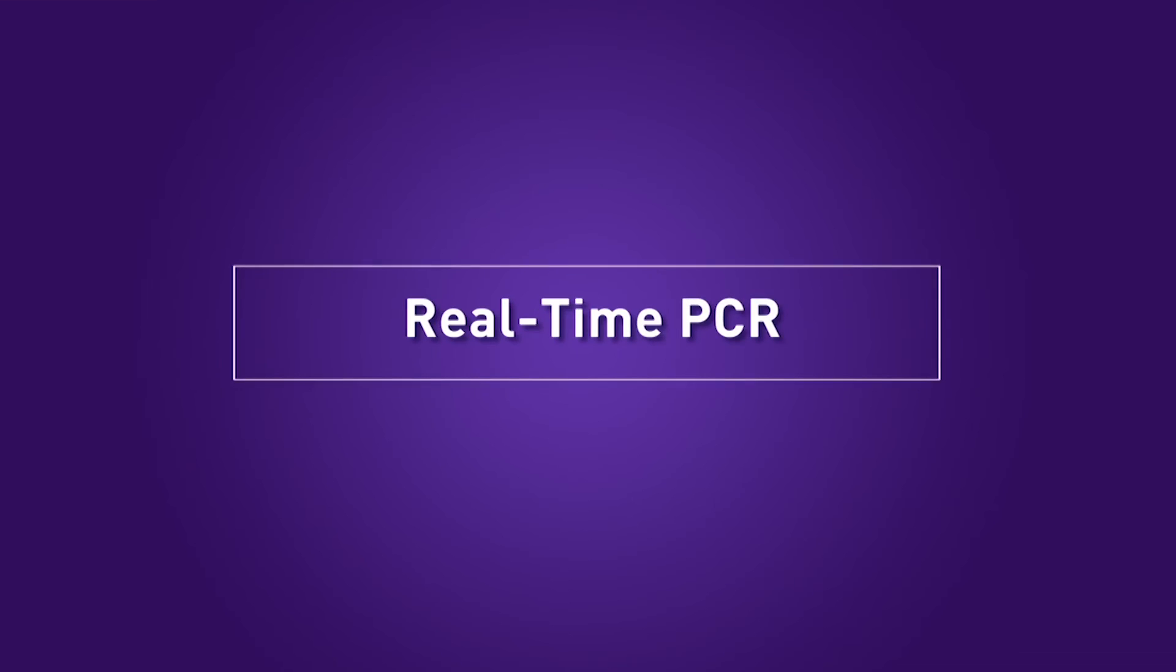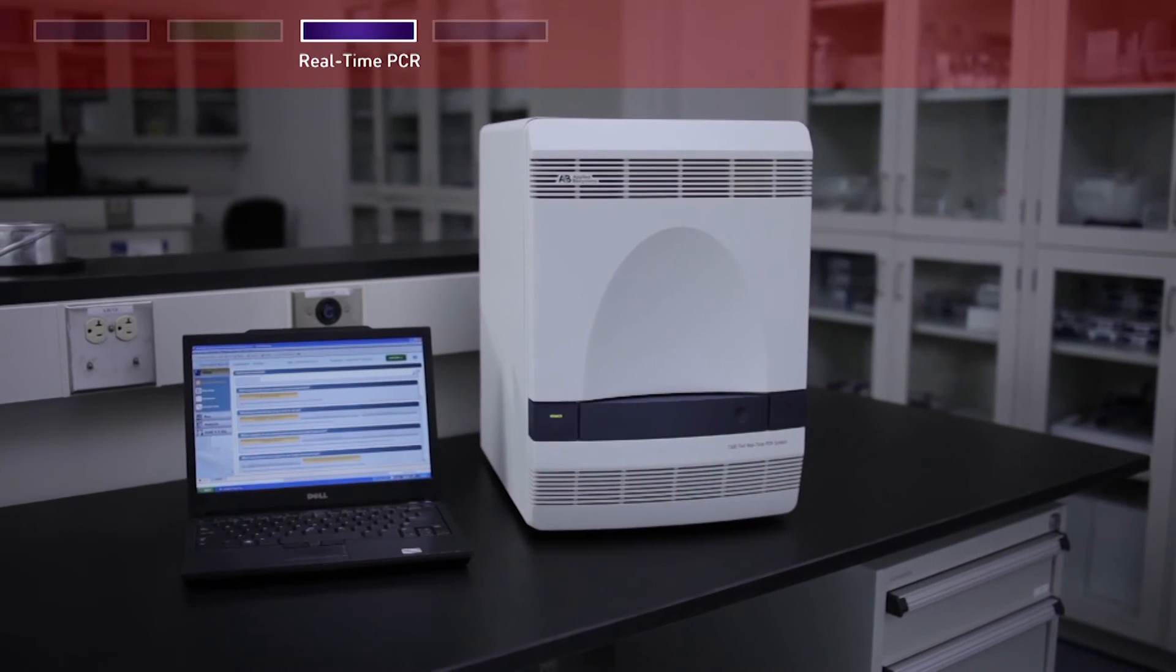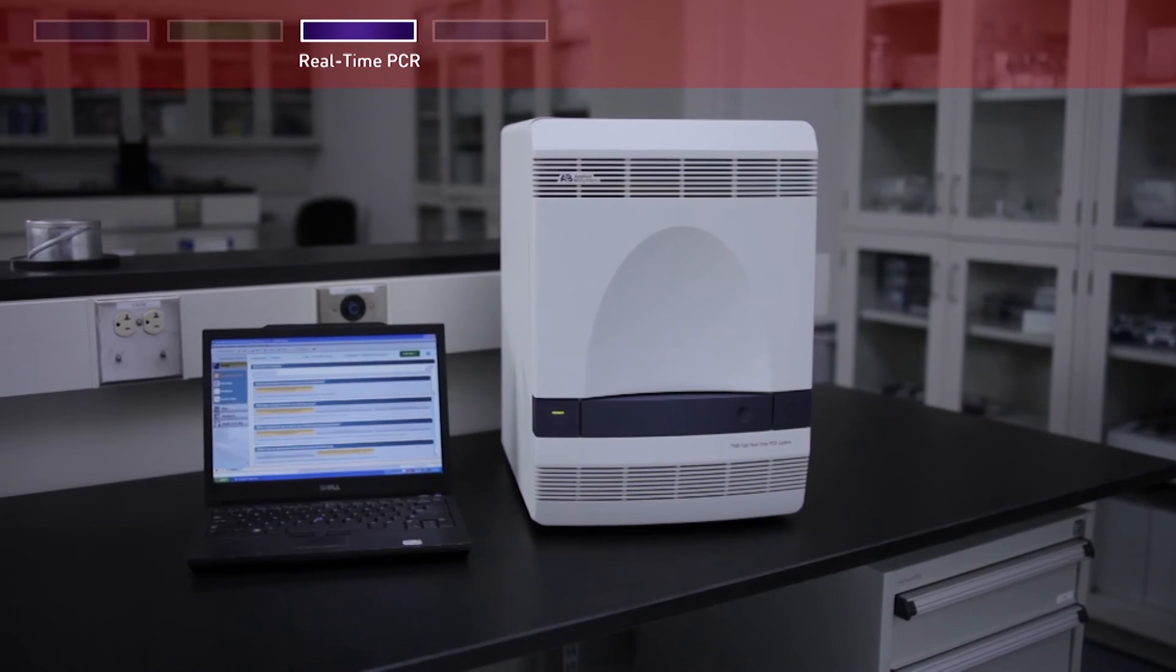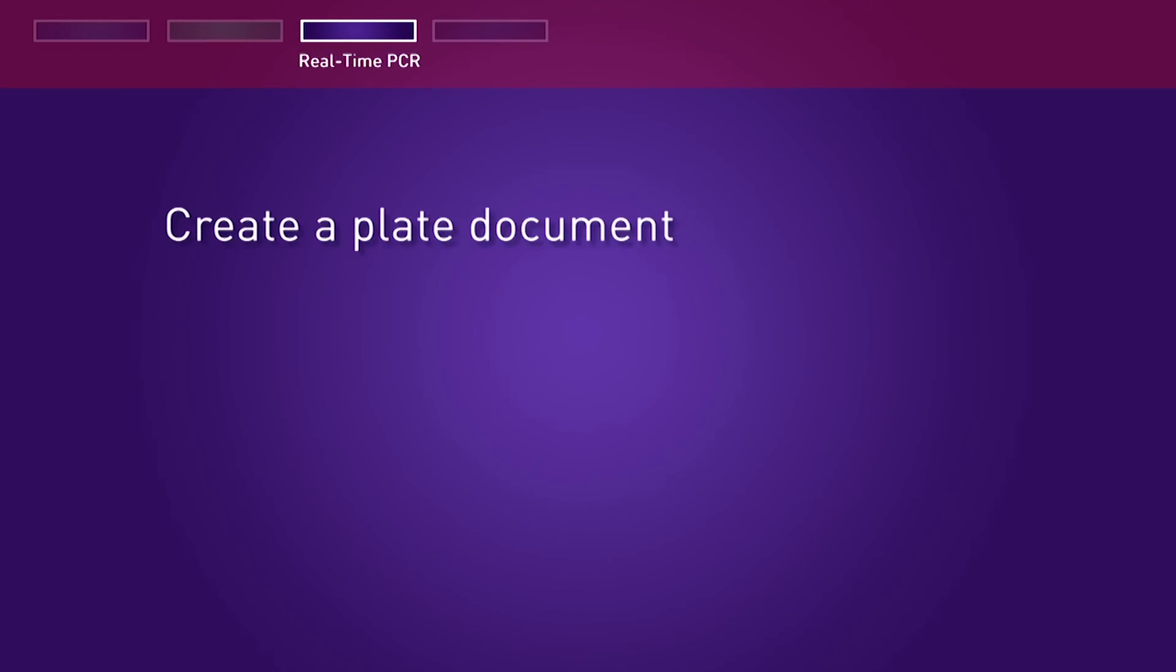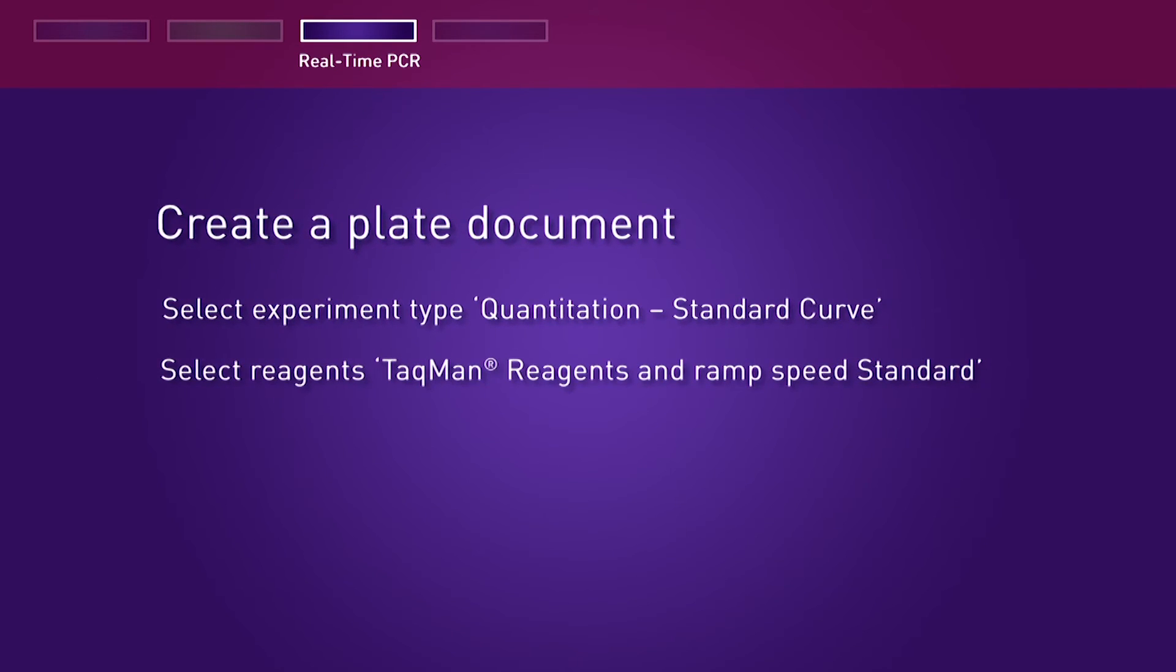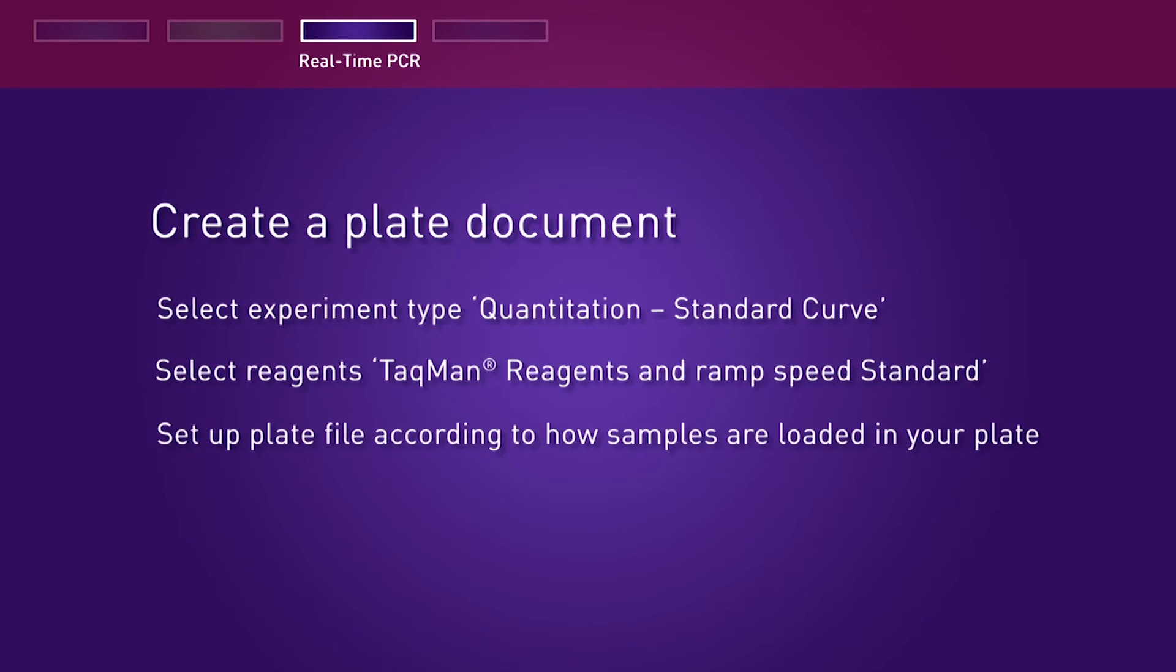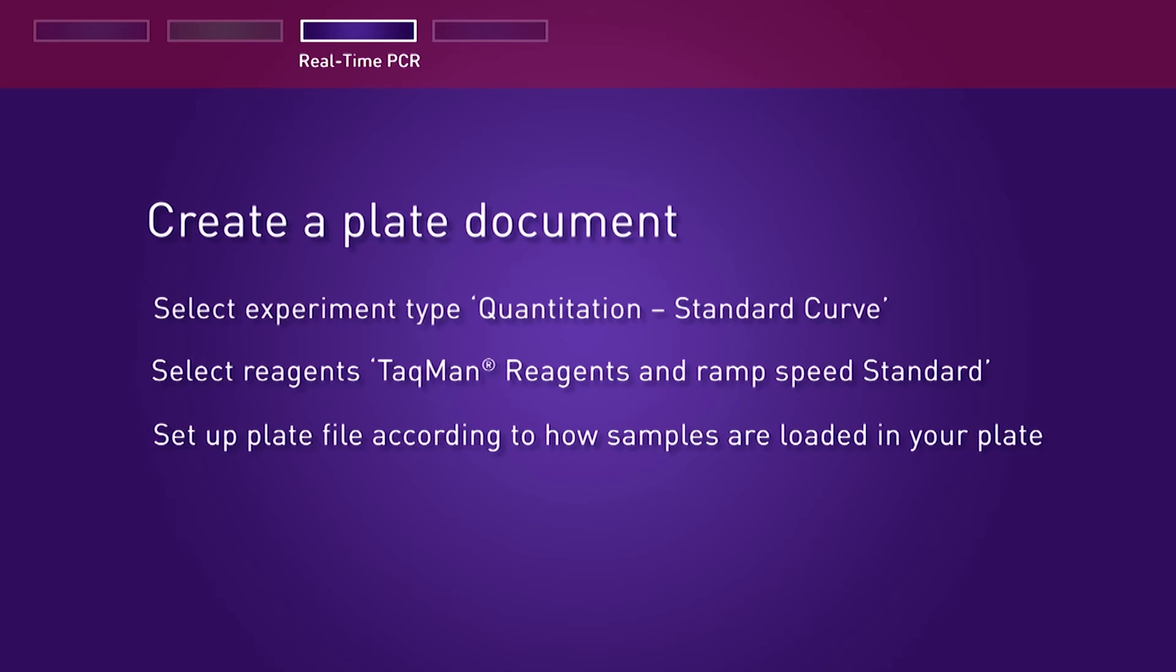Real-time PCR is performed in the Applied Biosystems 7500 Fast real-time PCR system. To begin the run, select Experiment Type: Quantitation Standard Curve, select Reagents: TaqMan Reagents, and Ramp Speed: Standard. Set up plate file according to how samples are loaded in your plate.